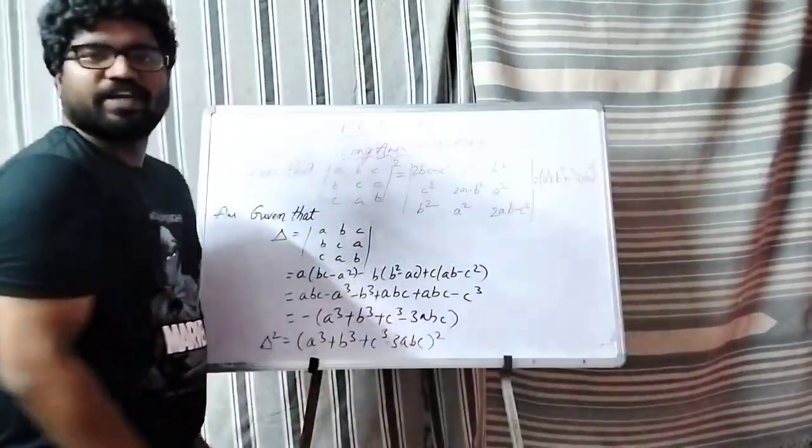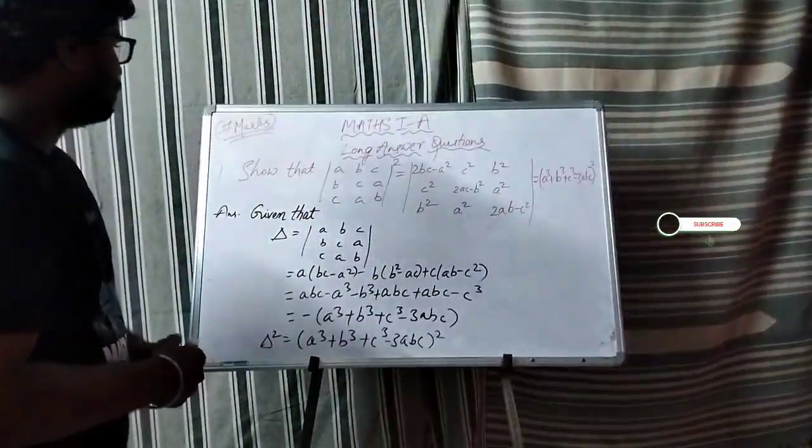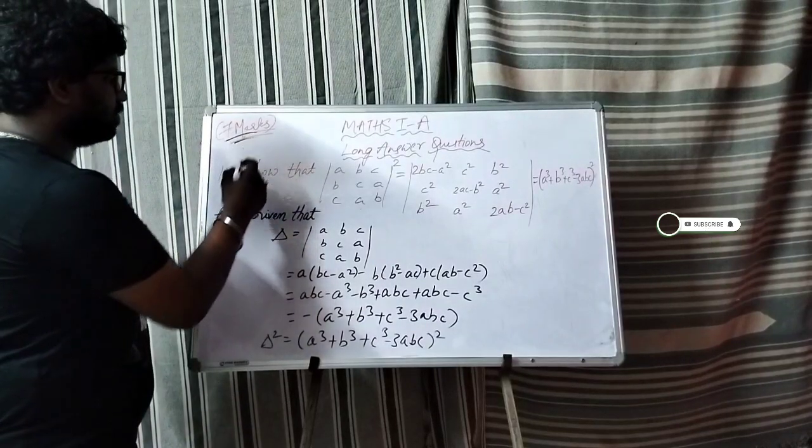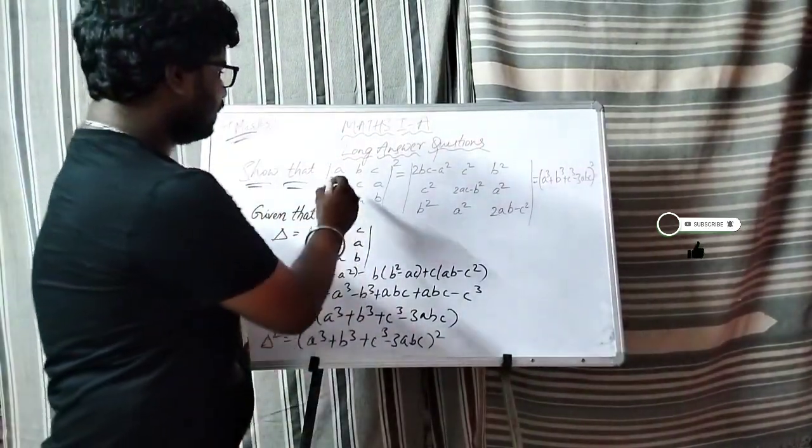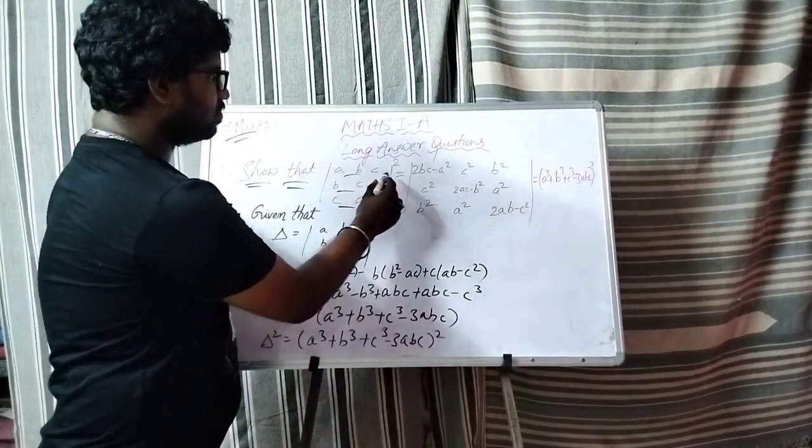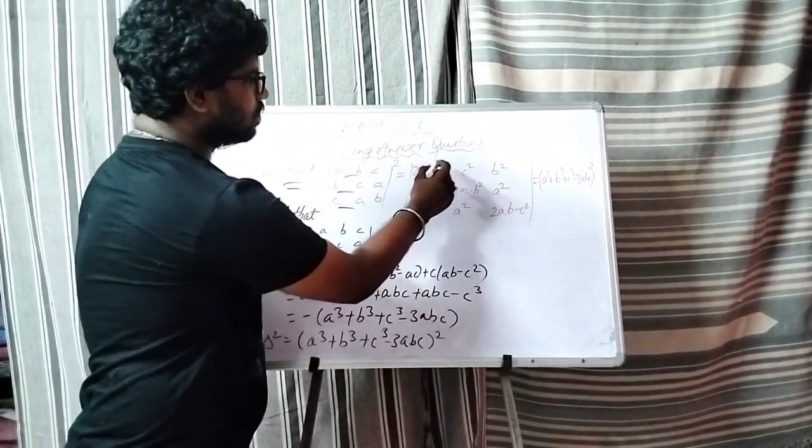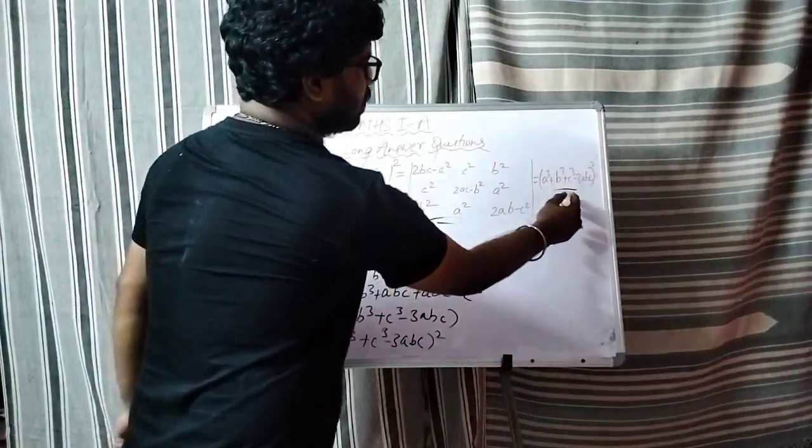I am going to discuss a long answer. I am going to show that modulus of abc, bc and cab whole square is equal to... this is the first condition.